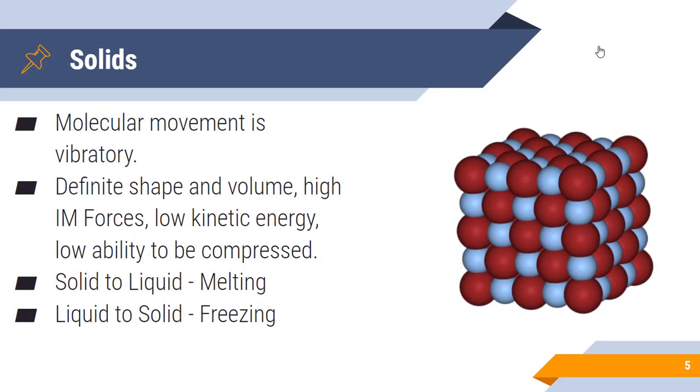When we talk about solids, molecular movement is vibratory. That means those molecules vibrate in a fixed position. There's definite shape and volume, high intermolecular forces because the molecules are very close together, low kinetic energy, and solids have a low ability to be compressed because they're already packed tightly. The phase change between solid and liquid is melting, and the phase change between liquid and solid is freezing.